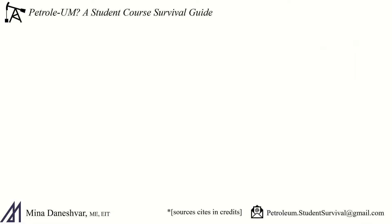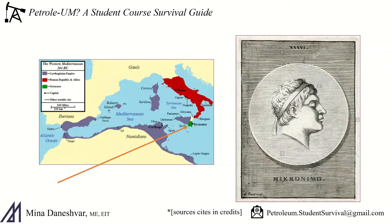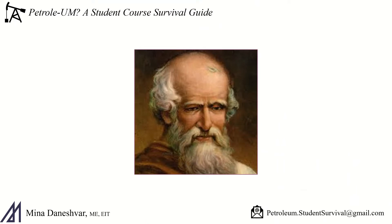The story goes, as told by Vitruvius, around 250 B.C. in the independent kingdom of Syracuse, King Hieron II was cheated by the craftsman tasked with fashioning him a new crown. Anything other than pure gold was not acceptable for a king to wear. Archimedes, a mathematician and inventor employed by the royal court, was asked to prove this. However, Archimedes could not damage the crown in any way, such as melting it down.